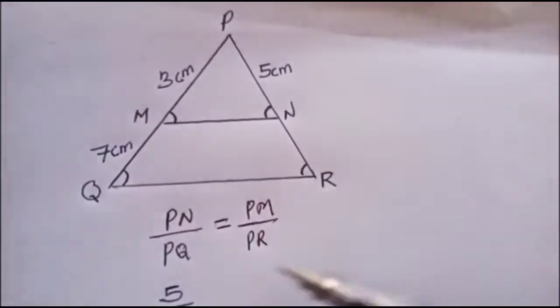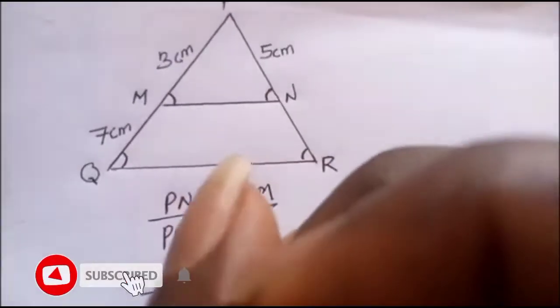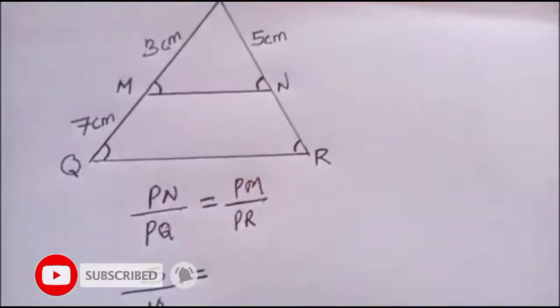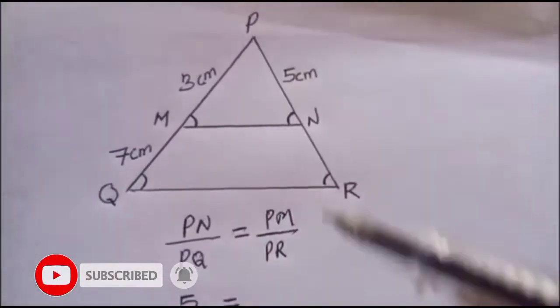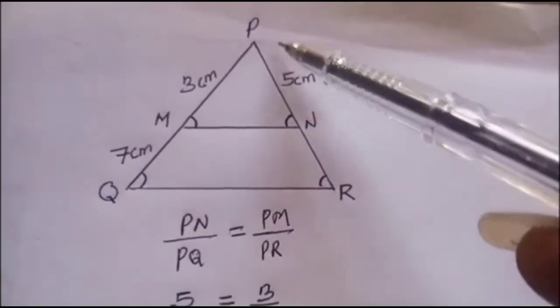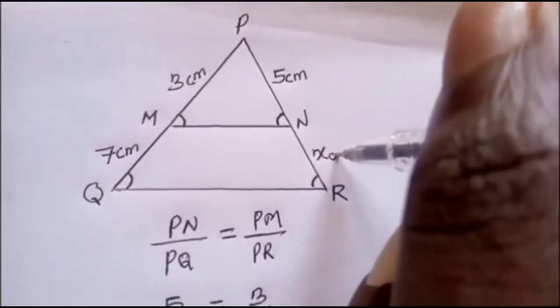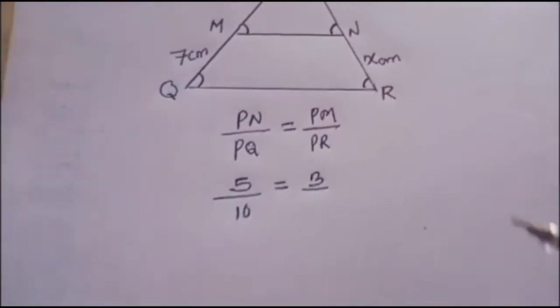You can see that the value for PN is 5 centimeters over PQ. The summation of 3 and 7 gives us 10, and we have 10 equal to PM over PR. So PR will be the summation of 5. Let's call NR x, unknown value.